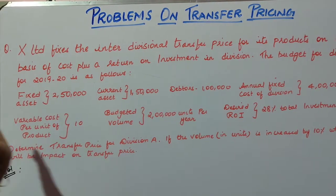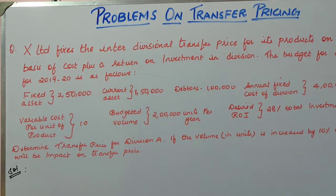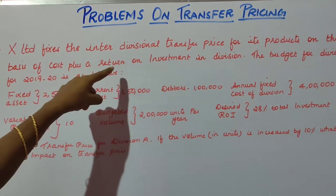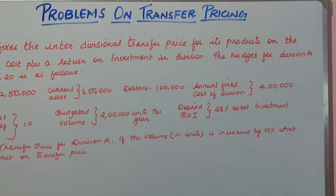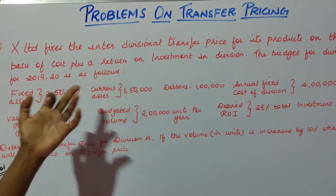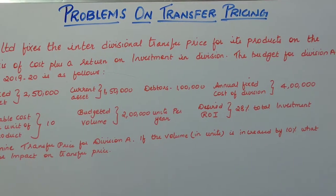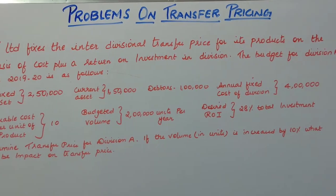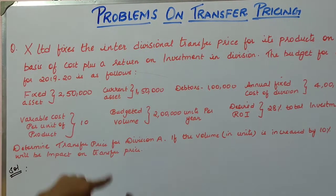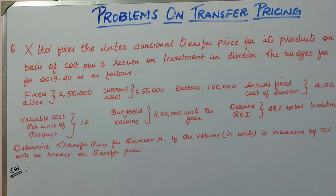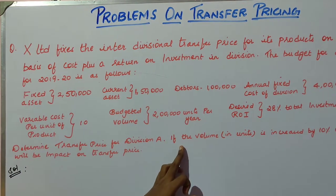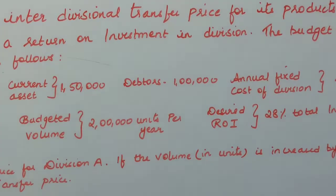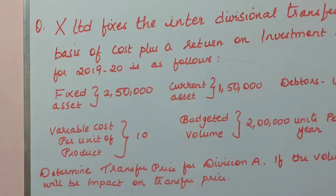Coming to the second question — X Limited generally fixes a transfer price for its product, and this transfer price is fixed on the basis of the cost plus method. The budget for Division A is given for the next year: fixed assets, current assets, debt, annual fixed cost, variable cost, budgeted volume, and desired return on investment. We need to determine the transfer price for Division A and find the impact if volume is increased by 10%.